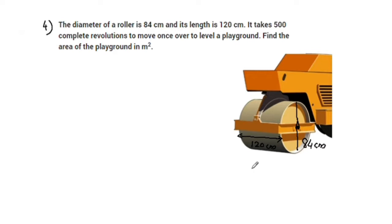It takes 500 complete revolutions to make the playground level. If you have a playground, you need 500 complete revolutions to level it. One complete round is one revolution — that is 360 degrees. So 500 revolutions cover the entire playground.